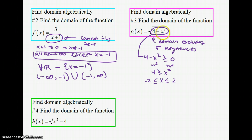If we plug in x = 3, we get 4 − 3² = 4 − 9, which makes a negative number. So x needs to be between −2 and 2; otherwise, x² will be bigger than 4 and we'd be taking the square root of a negative number.